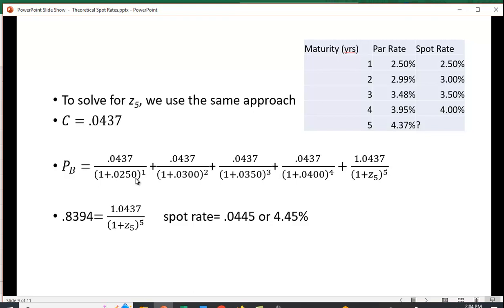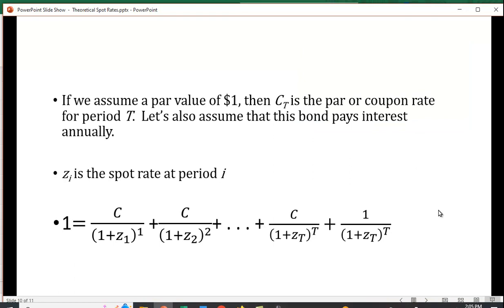We're going to discount the first cash flow by the first spot rate, the second cash flow by the second spot rate, the third by the third, the fourth by the fourth, and we're going to solve for Z5. We get 0.0445, or 4.45%. If we assume that the par value is a dollar, then CT is the par or coupon rate, and ZI is going to be the spot rate for each period.